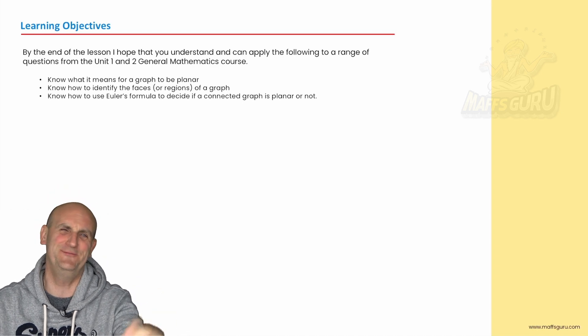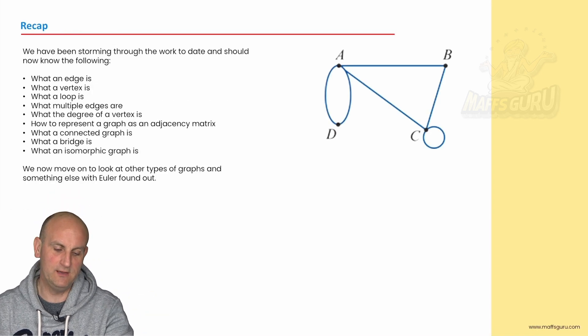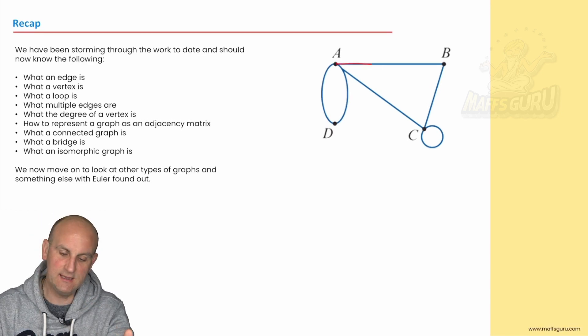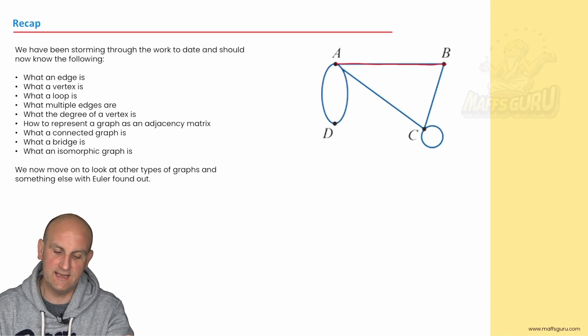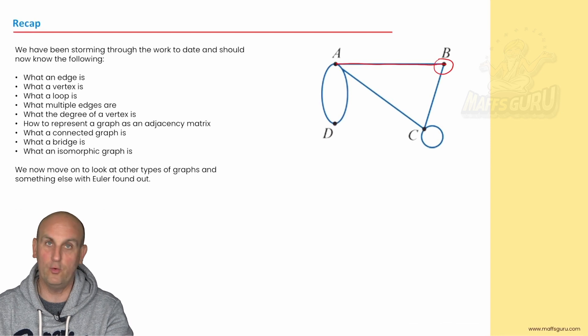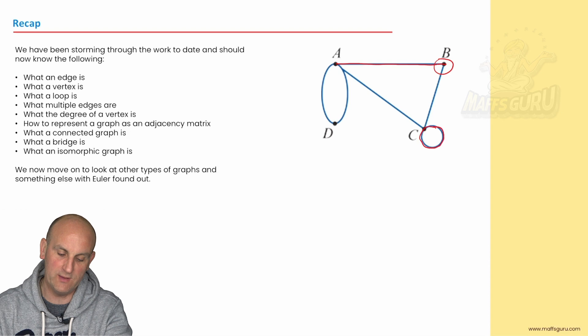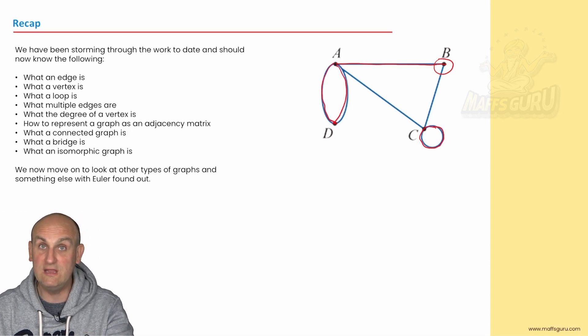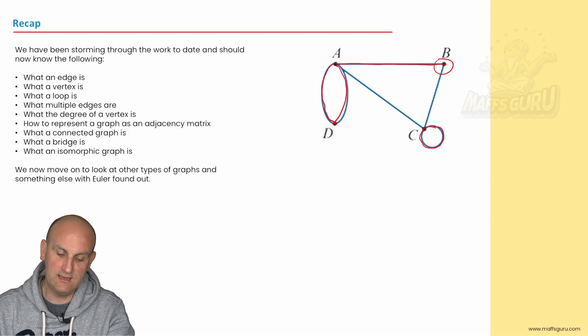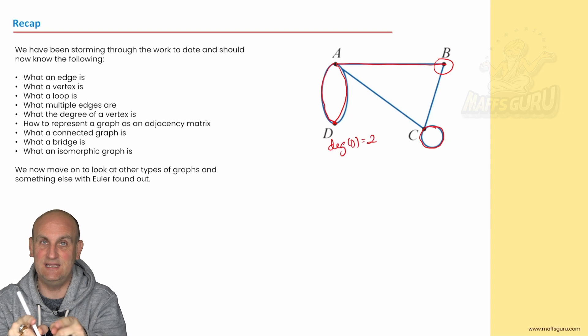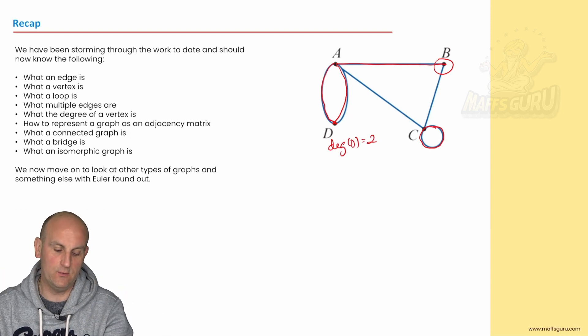Now in my previous videos, you've watched those haven't you? We have been doing a lot of stuff. We know what an edge is, what a vertex is, what a loop is, what multiple edges are. We know what a degree of a vertex is. So D has a degree of 2 because it's got two ways into D or two ways out.